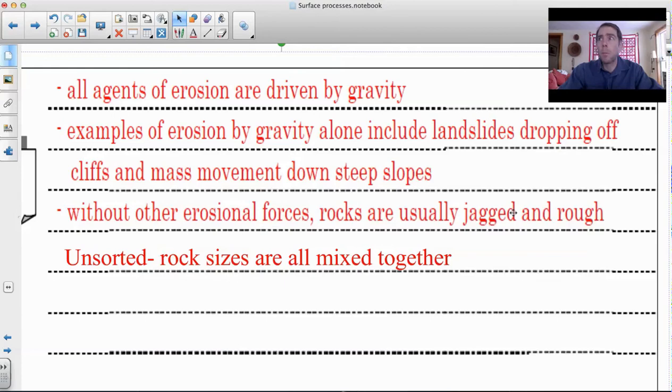Rocks deposited by gravity are jagged and rough. The other thing is that they're unsorted, which means all the rock sizes are mixed together. When you have a landslide, you're going to have big particles, medium-sized particles, and small particles all mixed together. If you take a core of the rock and look at it from the side, you'll have big particles, medium, and small all mixed together.